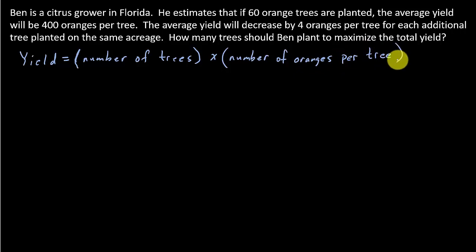So let's go ahead and figure out what our variable is. In this problem, we're going to let x equal the number of additional trees above 60.